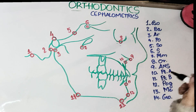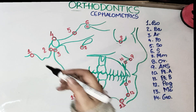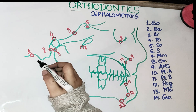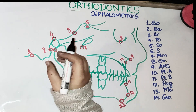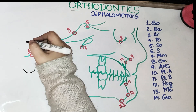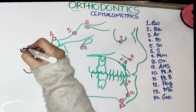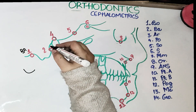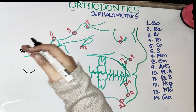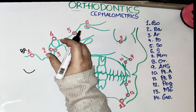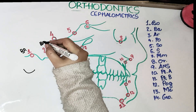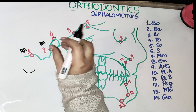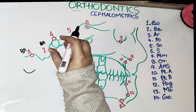We are going to study the most common points in Cephalometry today. The first one is the Bolton point — it is the highest point on the concavity behind the occipital condyle. The second point is the Basion point, and it is the most forward and highest point on the anterior margin of the foramen magnum.